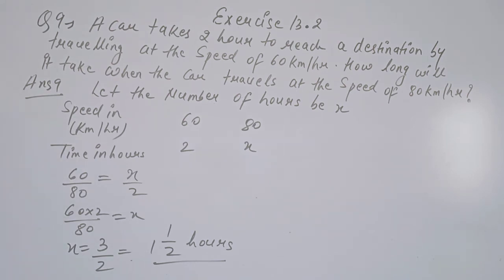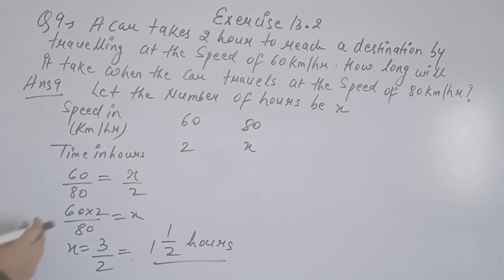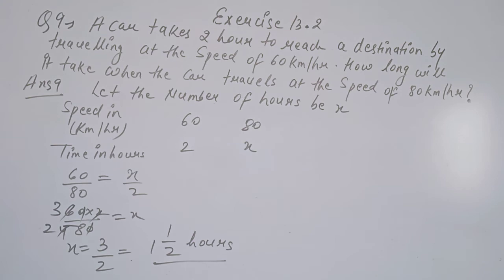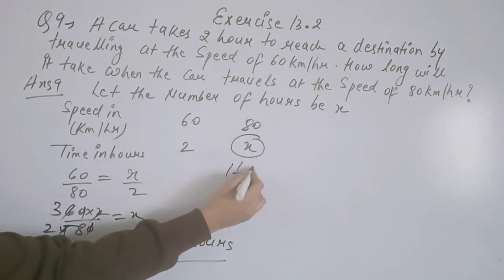Since speed and time are inversely proportional, 60 divided by 80 equals x divided by 2. So x = 60 × 2 ÷ 80 = 1.5 hours. Speed is higher so time taken is less — 1.5 hours.